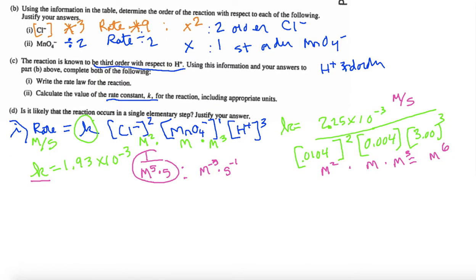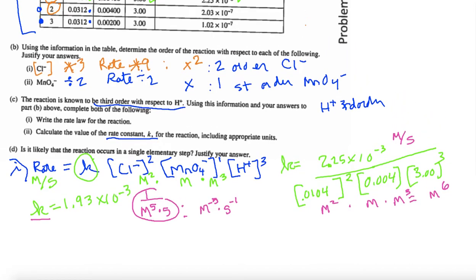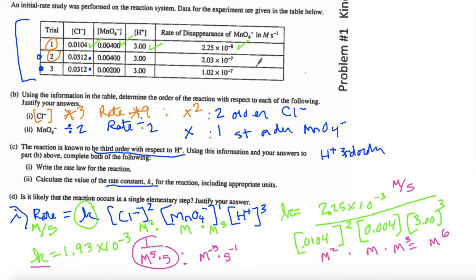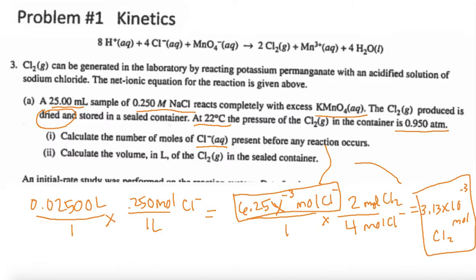Is it likely that this reaction occurs in a single elementary step? Justify your answer. First thing we can do, I'm going to scroll back up again. And I'm actually going to make this small for a second. Actually, I'm going to go back to the other slide. It'll make it easier. We have two ways we can do this. First thing is we're going to look at this. Do the coefficients of chloride, hydrogen ion, and permanganate agree with our rate law? Our rate law was Cl- was to the second order. MnO4- was to the first order. And then H+ was to the third order.